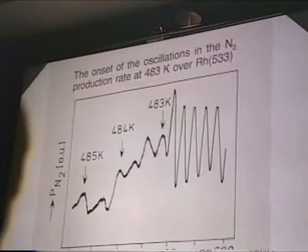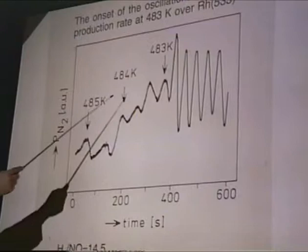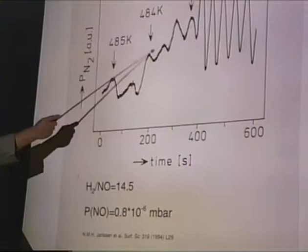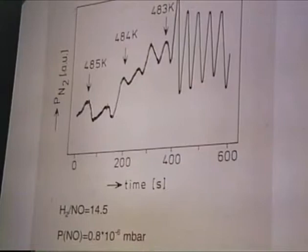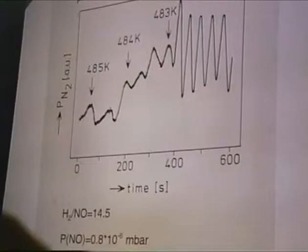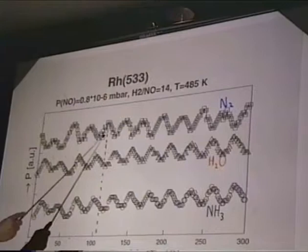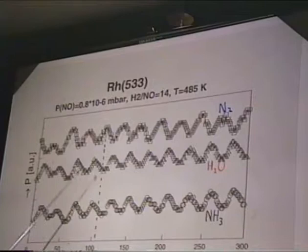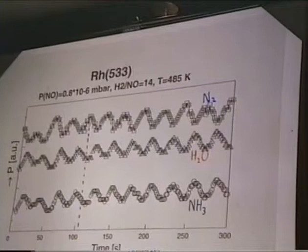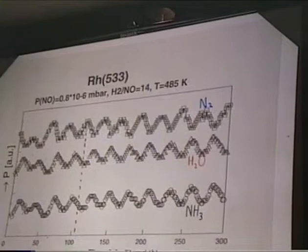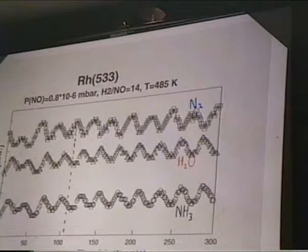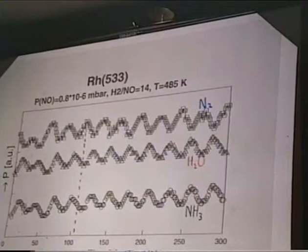Here is the 533 surface. The surface is exposed to a mixture of NO and hydrogen at a given temperature. The temperature is decreased very slowly, and steadily the reaction rate starts to oscillate. When you look at the selectivity, it turns out there is an oscillation in selectivity, but very different from what we found on platinum. Dinitrogen is in phase; water is out of phase; NH3 is out of phase. On rhodium, we didn't find any formation of N2O under these experimental conditions.